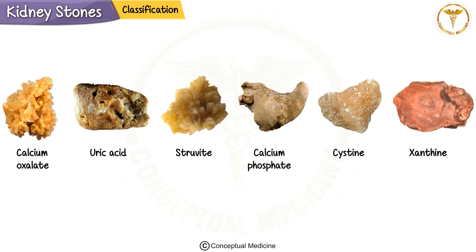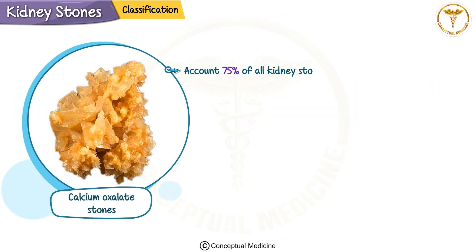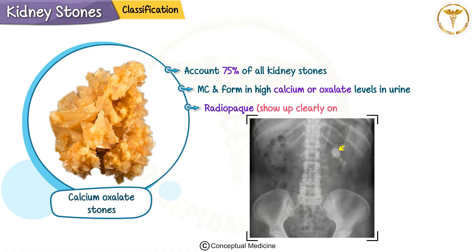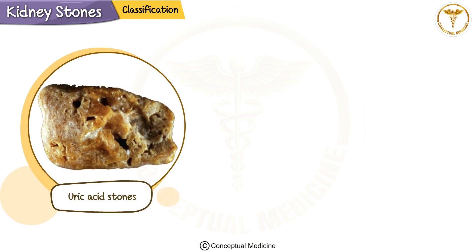Starting with calcium oxalate stones, which account for about 75% of all kidney stones — the most common type, forming in people with high calcium or oxalate levels in their urine. These stones are radiopaque, meaning they show up clearly on x-rays. Microscopically, their crystals appear as dumbbells or bipyramidal envelopes.